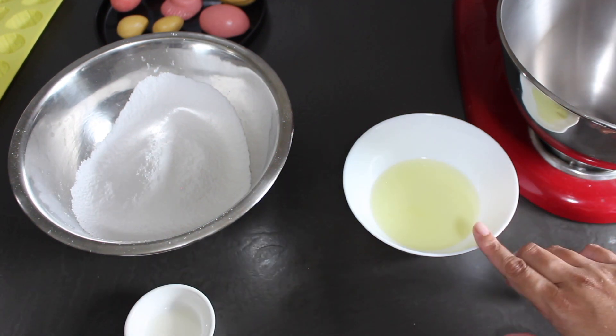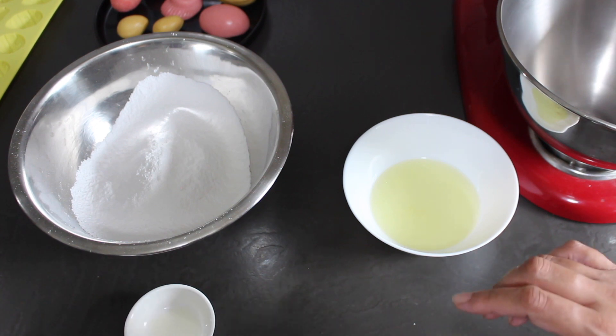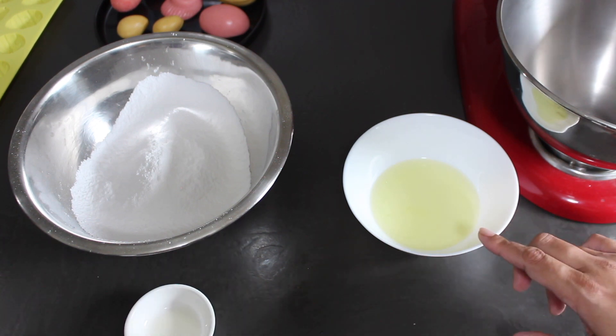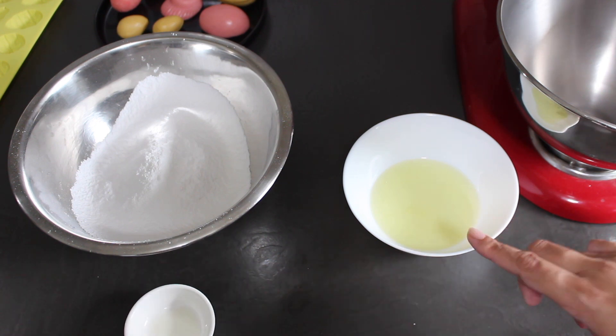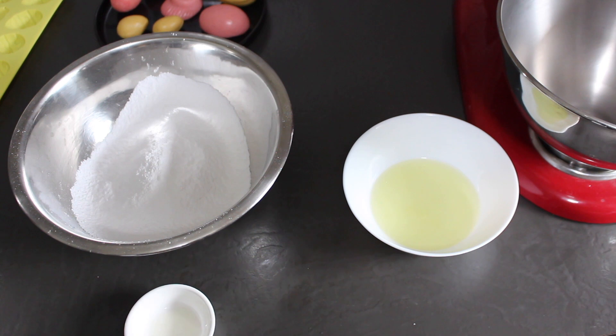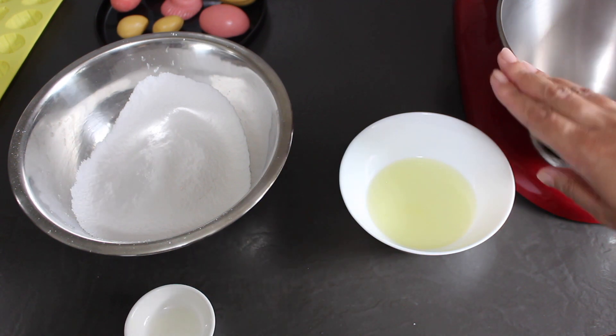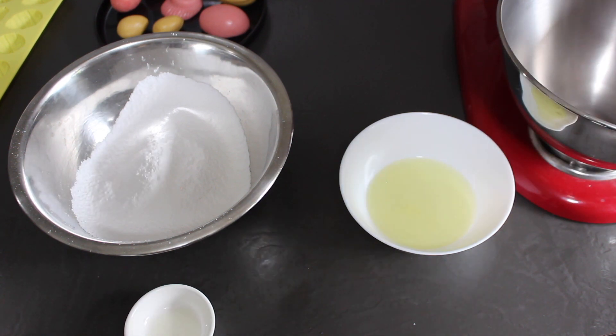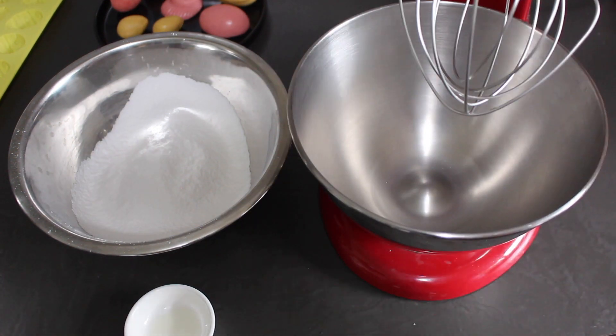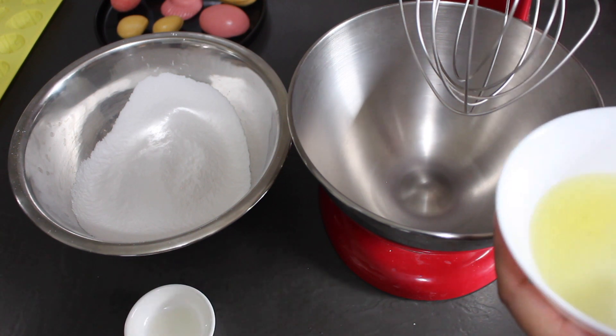Now it's important that you don't have any, not even a speck of egg yolk in here, because if you've got egg yolks, even the tiniest bit, you're going to end up with a mix that does not beat up to stiff peaks and you won't be able to pipe out your royal icing. Likewise with your bowl, your mixing bowl has got to be clean. You can't have traces of grease on it, so make sure that you clean that out thoroughly.